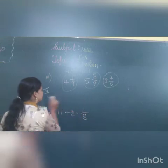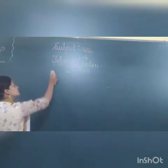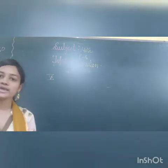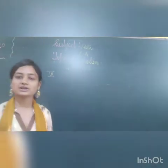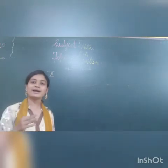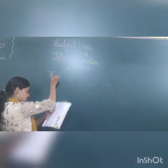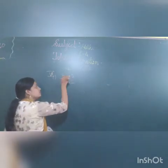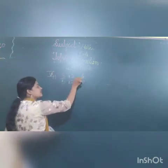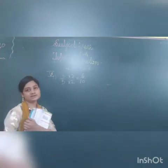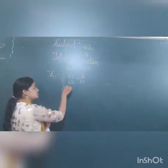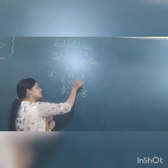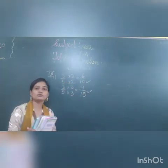Now we go for the sixth question: write two equivalent fractions. We saw that equivalent fractions are found by multiplying the fraction with the same number — both numerator and denominator must be multiplied by the same number. First one: we have 3 by 5. I will multiply with 2 to get 6 by 10 — this is an equivalent fraction. Then I multiply with 3 to get 9 by 15 — this is another equivalent fraction. So I found two equivalent fractions for 3 by 5.